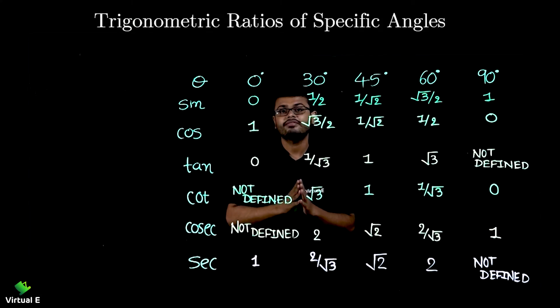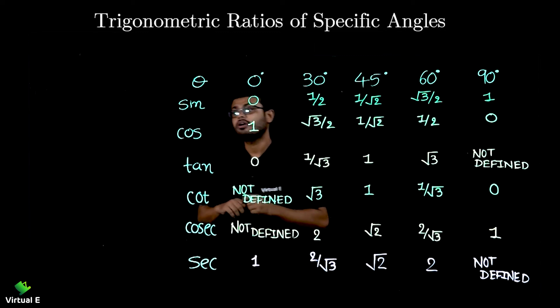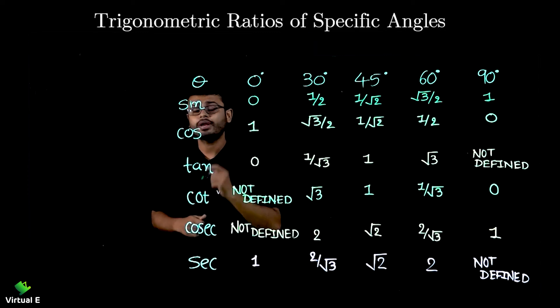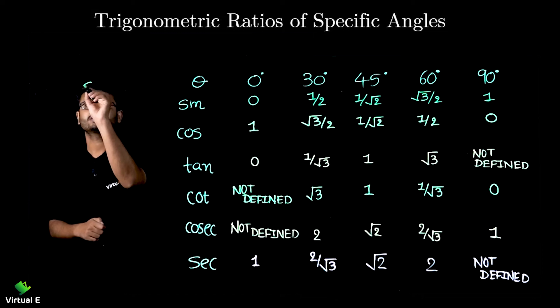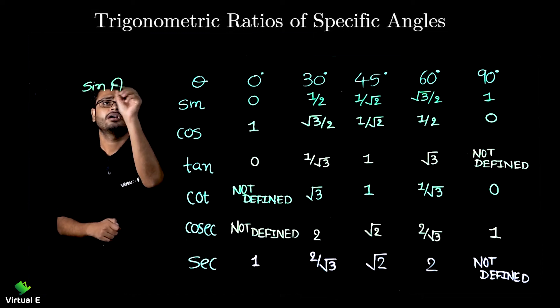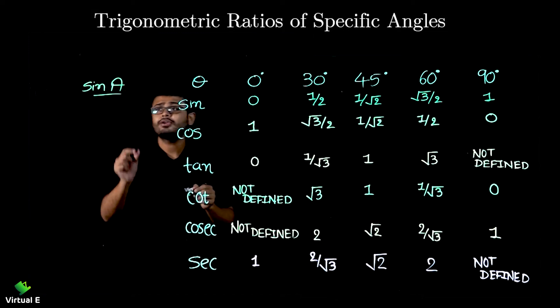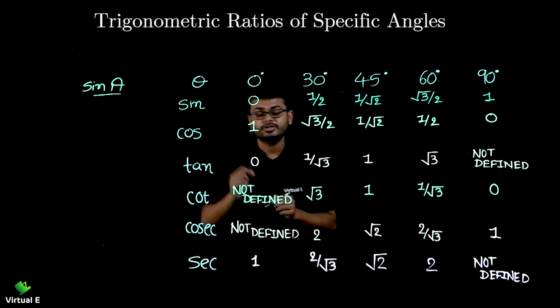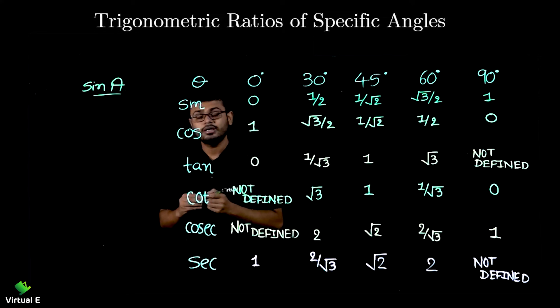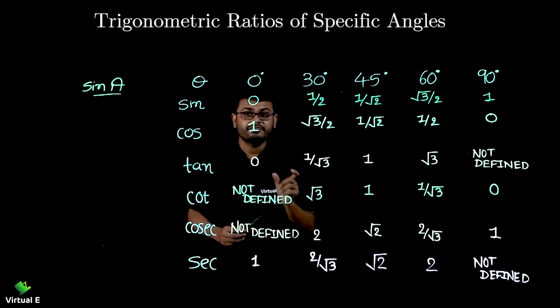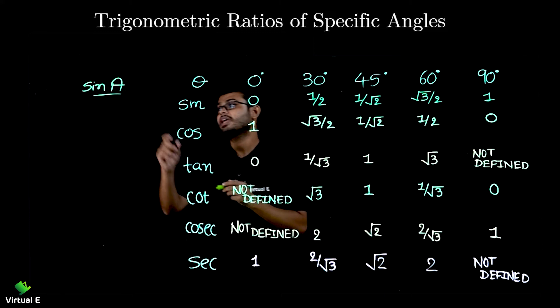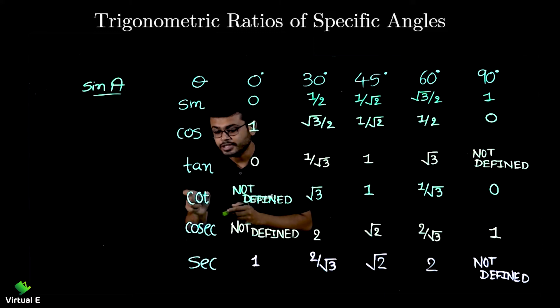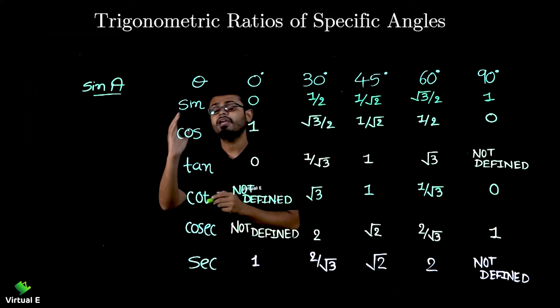So far we were finding values of trigonometric ratios for unknown angles, like sine A, where we were not aware of the value of the angle, though we were able to find the trigonometric ratio. Now in this session we are going to learn some specific or known values of the angles for specific ratios.